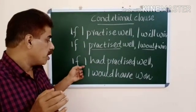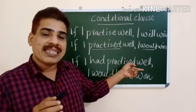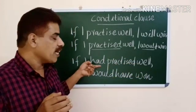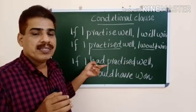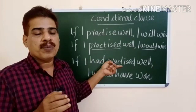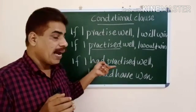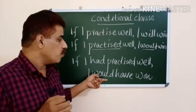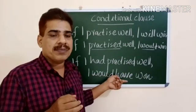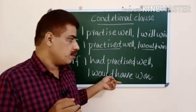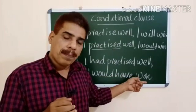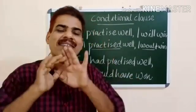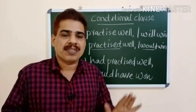For the third type — unreal condition in the past — we use 'had' plus the past participle form of the verb after 'if.' For example: 'If I had practiced well...' In the main clause we use 'would have' plus the past participle form of the verb. This is the unreal condition in the past — there is no chance for it to occur.